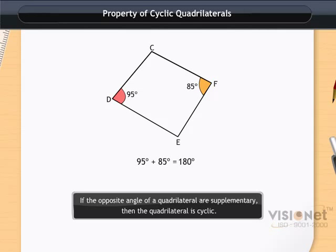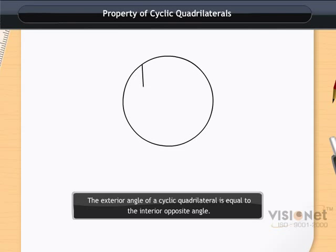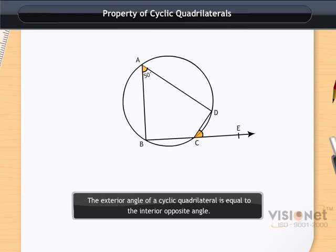Since the opposite angles are supplementary, the quadrilateral CDEF is a cyclic quadrilateral. Now the second property of a cyclic quadrilateral states that the exterior angle is equal to the interior opposite angle. In cyclic quadrilateral ABCD, extend line BC to point E. With angle BAD equal to 50 degrees, angle DCE is the exterior angle and equals angle BAD, so angle DCE is equal to 50 degrees.